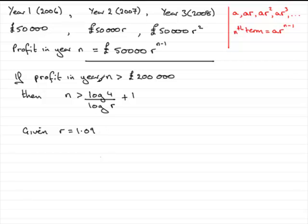Well, we've already discovered that in general the profit in year N being greater than £200,000 is given by this formula here. So all we need to do is substitute R equals 1.09 into this formula.